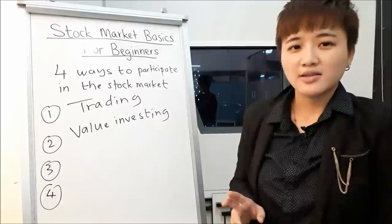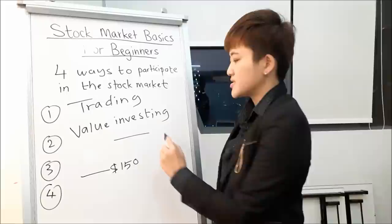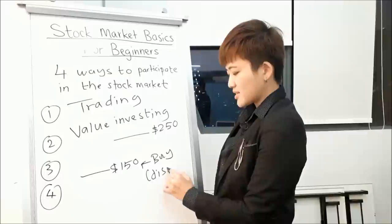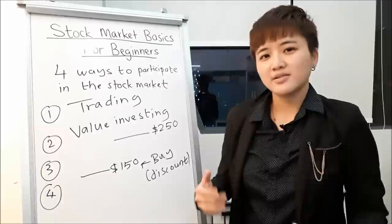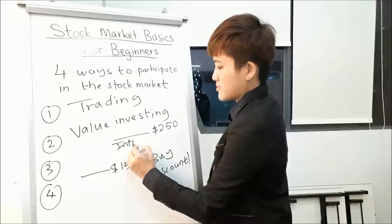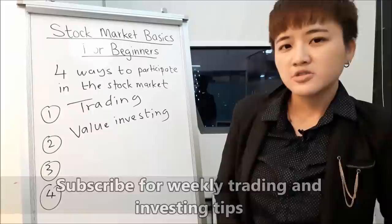The second way is to do what Warren Buffett does: value investing. You buy companies below their intrinsic value. If a stock is trading at $150 but you calculate its intrinsic value at $250, you're buying at a discount. It's like going to a store where an LV bag normally sells for $1,500, but on Black Friday it's $550 — you're buying at a discount. The intrinsic value is the true value of the company. I'll go into how to calculate intrinsic value in detail in future videos.